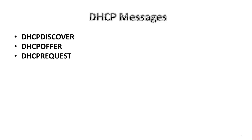Then we have the DHCP Request. This is a client message sent to one or more servers to do many things: to request parameters from one server, implicitly decline offers from other servers, confirm that a previously allocated address is still correct after a system reboot, and also to request an extension of the lease of a network address. Finally, the DHCP Acknowledgement message is sent by the server.